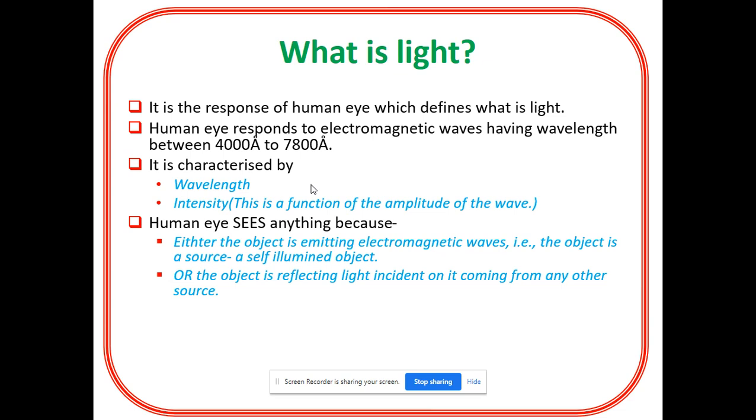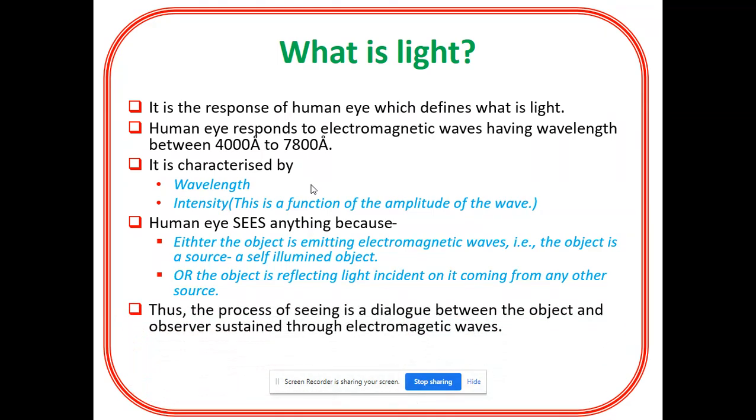As I already told you, human eye sees anything because either the object is emitting EM waves, that is the object is self-luminous, or the object is reflecting light incident on it coming from any other source. It is also said in the same terms that light itself is not visible but it makes other objects visible, and we can see the object only when light is reflecting and coming within the eyes. If the light passes the object then we will not be able to see the object.